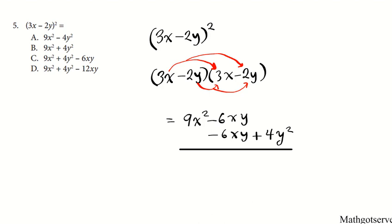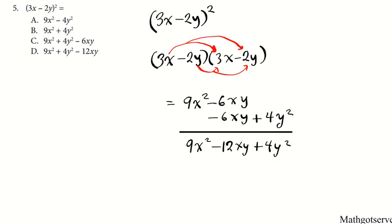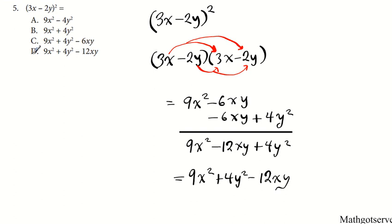When we combine, notice how the like terms line up. We're going to have 9x squared; when the signs are the same, add and keep the sign, giving minus 12xy; plus 4y squared. Rearranging so the squares are placed next to each other: 9x squared plus 4y squared minus 12xy. Our final answer is option letter D.